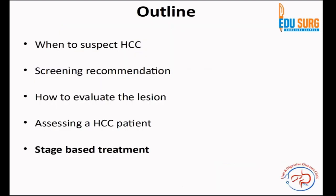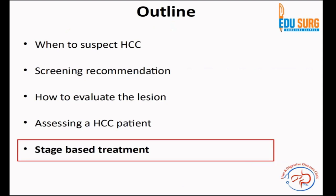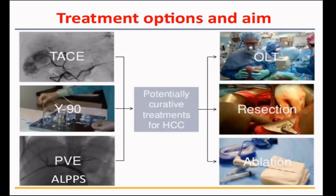Coming to BCLC — the standard of care for HCC — the left-hand column of treatment options are not curative but are used to take the patient from a non-curative place to a curative place. TACE, portal vein embolization, or surgical partial portal ligation are treatments which can convert the patient into resectable, or patients can then be taken for transplant or ablation. Curative treatment options for HCC are liver resection, liver transplant, and ablation. Other treatments are used as adjuncts to convert patients into curative treatment.